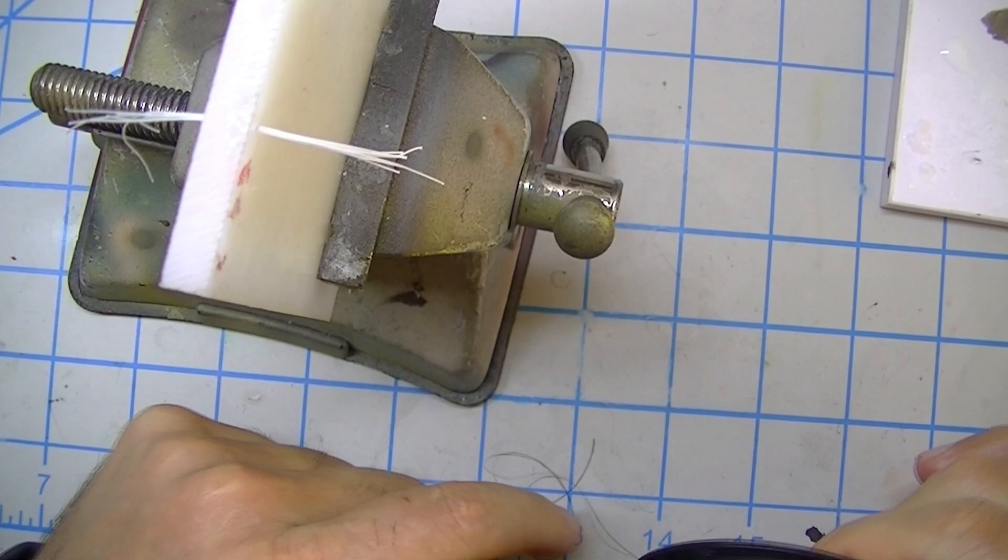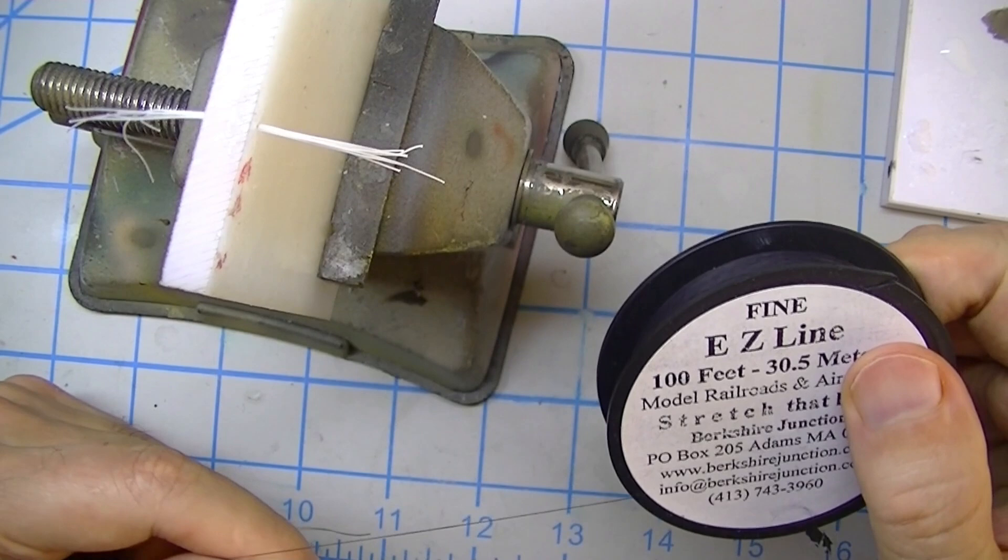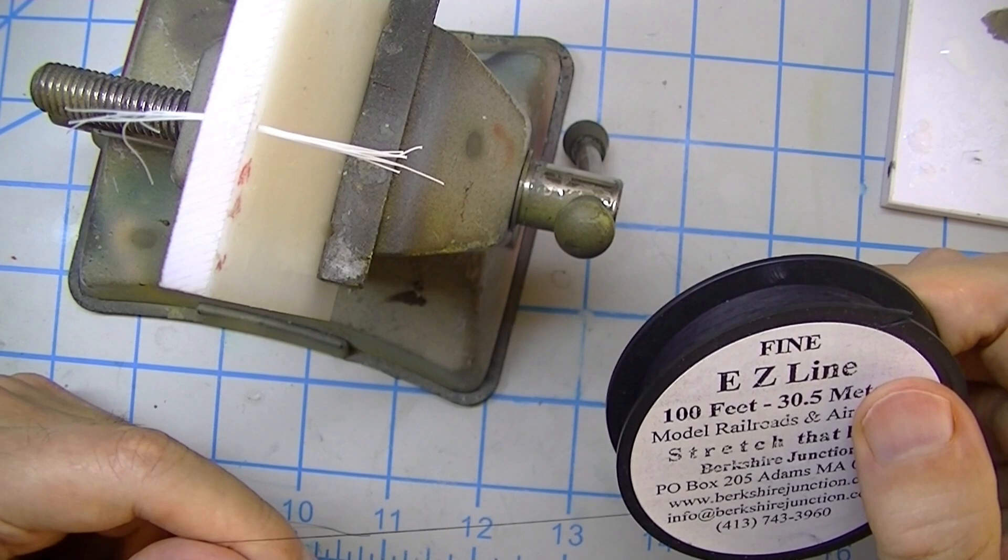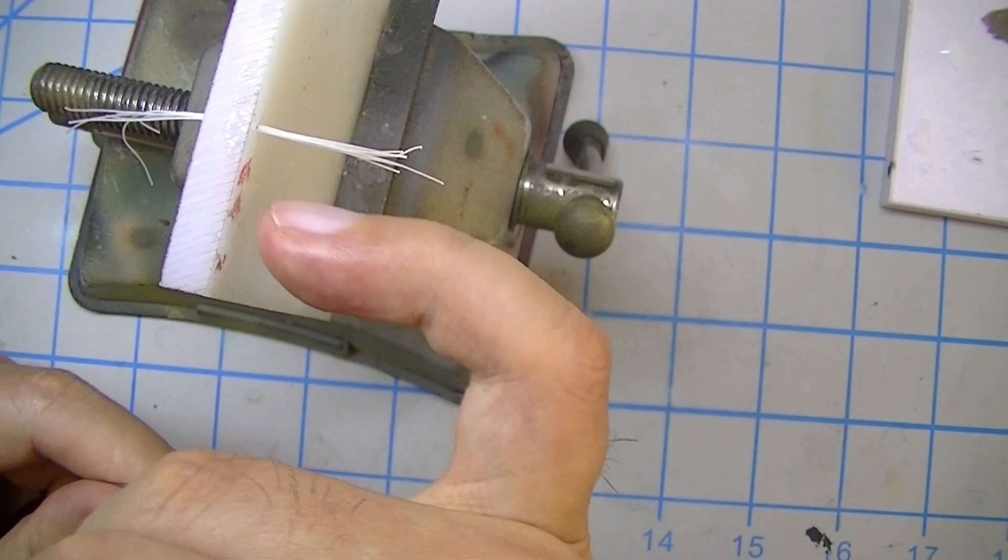You could just take and put some super glue on that and bundle it together, but there's two problems: it gets kind of messy and it also gets really stiff, and the other is that you don't get the zip ties or the wax string effect.